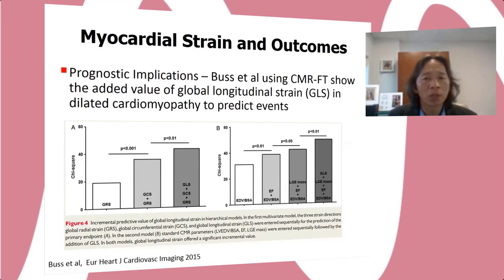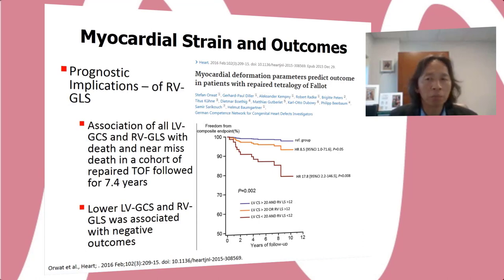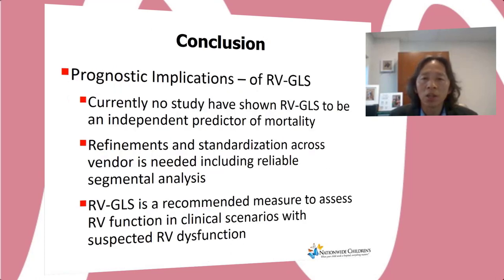Regarding strain and outcomes, Bucidal reported in 210 patients with dilated cardiomyopathy over 5.3 years the added value of LV strain parameters to detect cardiovascular events. For the RV, they reported 372 patients with repaired tetralogy of Fallot followed over a median of 7.4 years, showing an association of LV strain parameters and RV GLS with cardiovascular events including death. A combined LVGCS magnitude less than 20 and RV GLS less than 12 predicted negative outcomes. Currently, there are no studies showing RV GLS as an independent predictor of mortality, and standardization across vendors is still needed.